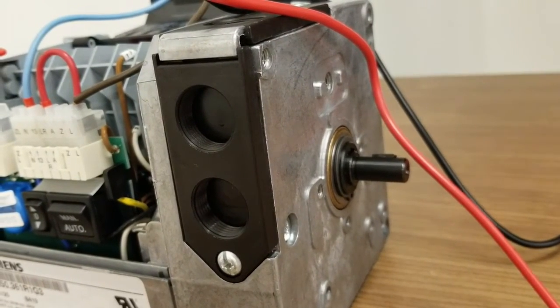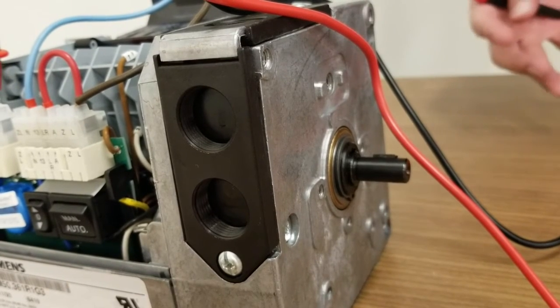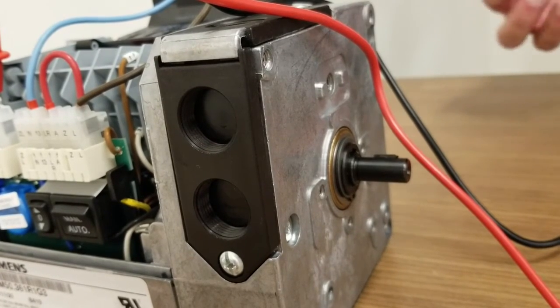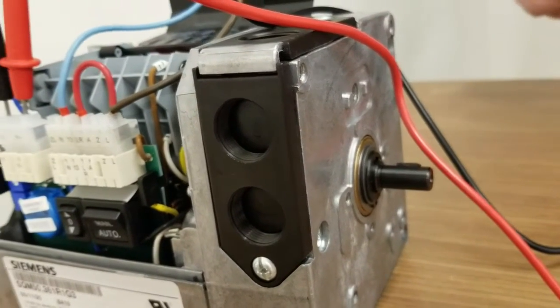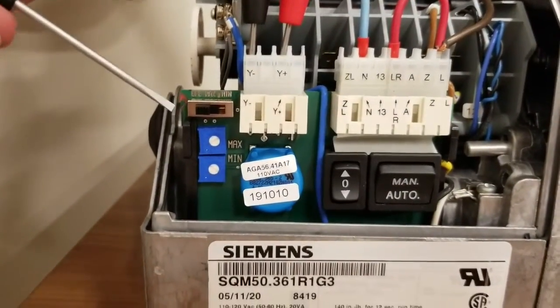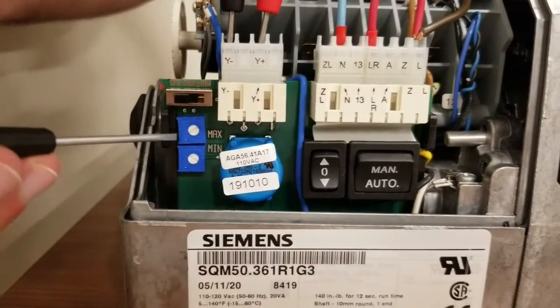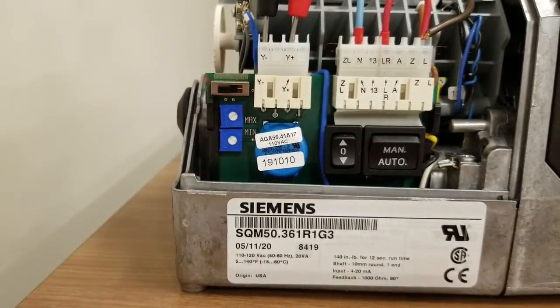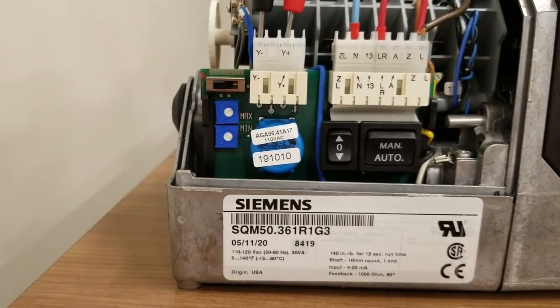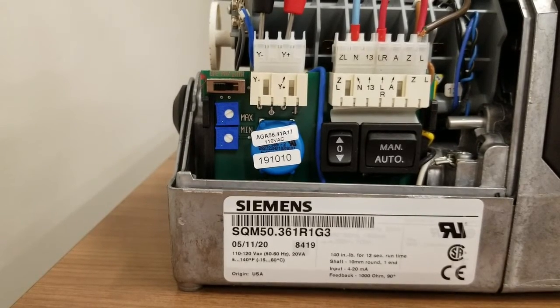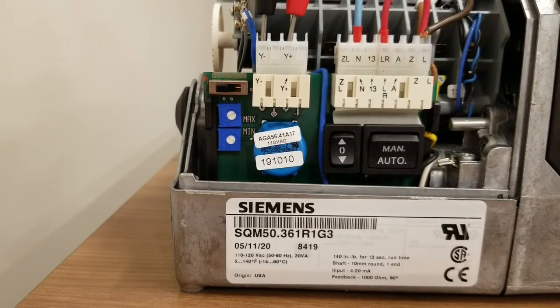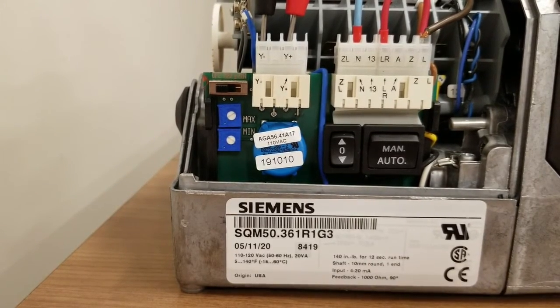Once we've reached our maximum open position, we want to make sure that we have a properly scaled input. The way we do this is to use a small flathead screwdriver like this one and adjust the max pot, this blue max pot. You're going to rotate that in a counterclockwise direction until the motor starts to drive slightly downward. This adjustment will ensure that we are utilizing the full range of the input signal.